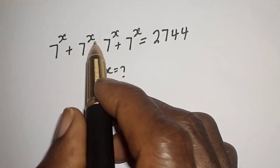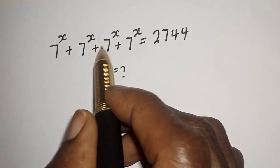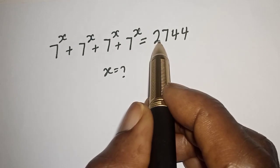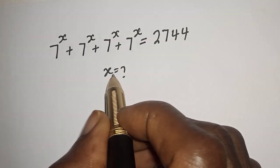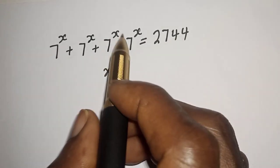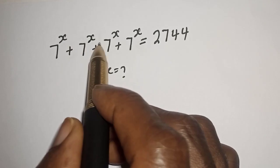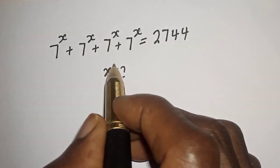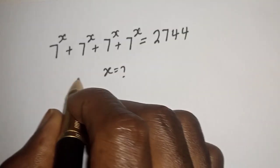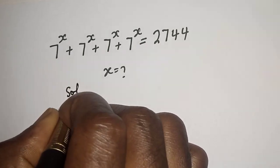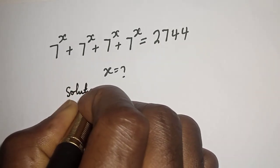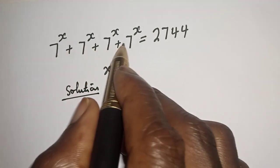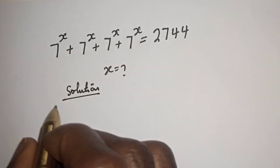7 raised to power s plus 7 raised to power s plus 7 raised to power s plus 7 raised to power s is equal to 2744. What is the value of s? Hi everyone, welcome to my class. In this class we quickly want to find the value of s from this equation. But before we proceed, please don't forget to like, share, comment and subscribe.